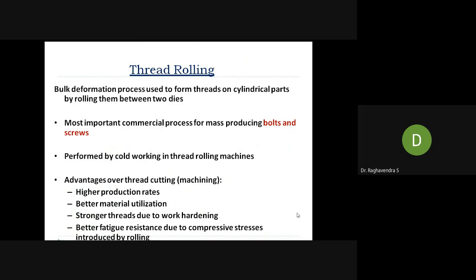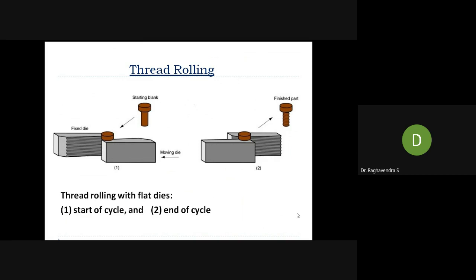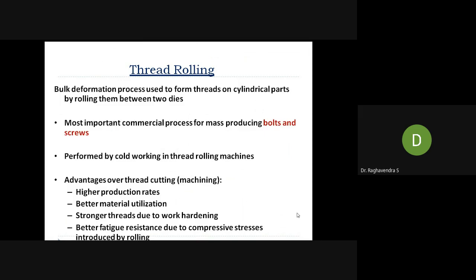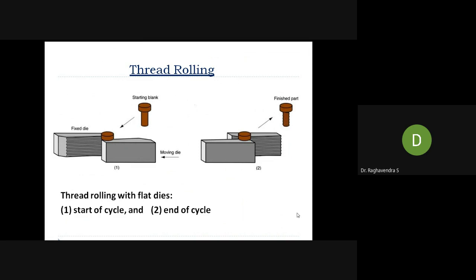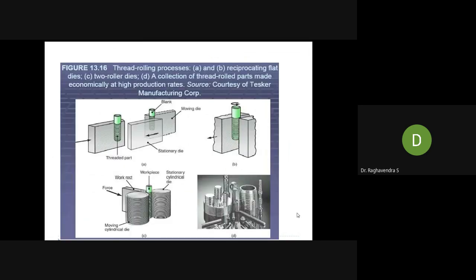Thread rolling is a bulk deformation process used to form threads on cylindrical parts by rolling them between two dies. It is the most important commercial process for mass-producing bolts and screws. Whenever you need a threaded surface, a thread die structure is used; when the material is rolled over it, the same thread pattern is embossed on the material surface. The thread rolling process shows how threads are formed: a green-colored threaded die rolls over the workpiece to produce the same thread geometry.